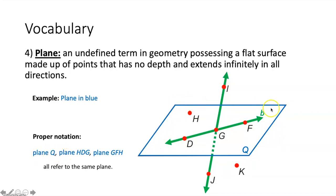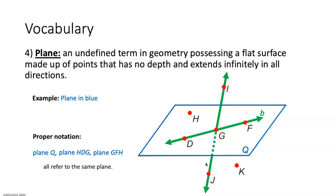So we would say plane Q, and that would describe this plane. Just like we chose two points on a line to describe that line, you could choose three points to describe a plane. But the catch is all three points cannot be on the same line. So we could describe this plane also as plane HDG, HGD, DHG, HGF, or FGH. You could choose three points that do not lie on the same line to describe a particular plane.